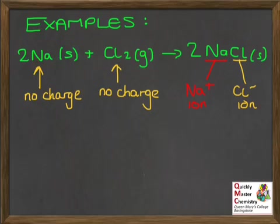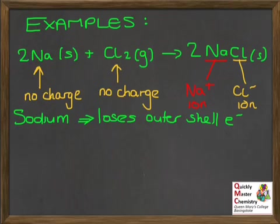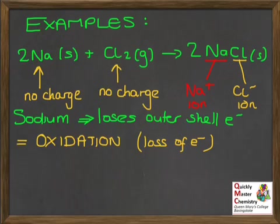What does this mean in terms of reduction and oxidation? The sodium, when it reacts, has lost its outer shell electron to go to the Na⁺ ion. We said loss of electrons was oxidation. So therefore in this reaction — it is a redox reaction — sodium is being oxidized.